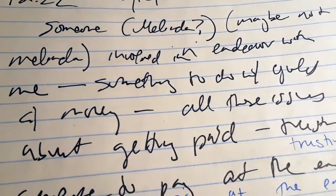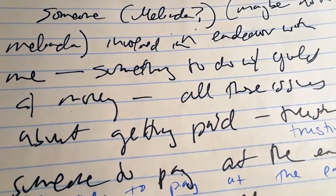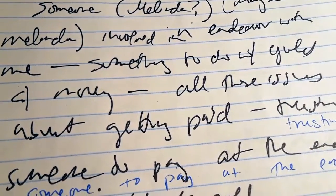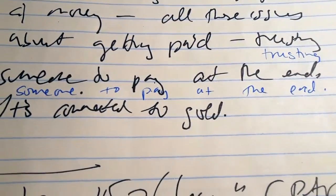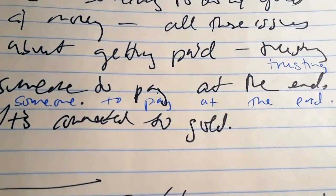So someone is involved in an endeavor with me. Something to do with gold and money. All these issues about getting paid. Trusting someone to pay at the end. It's connected to gold.